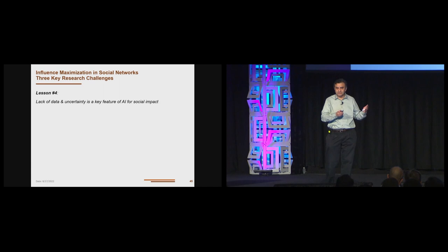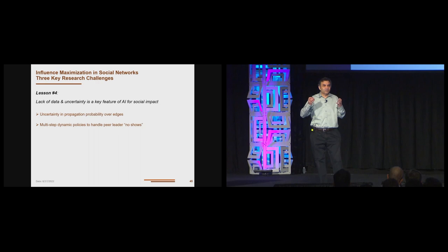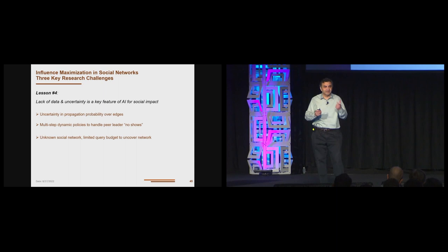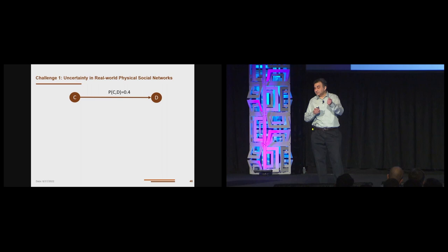If we take algorithms that have already been developed in the literature and try to apply them directly out of the box, here are some problems we face. Basically, there's a lot of lack of data and uncertainty. The lesson I want to point out is that lack of data and uncertainty is a key feature of AI for social impact. And we have to figure out techniques to get around that. I said the propagation probability is 0.4, but there's uncertainty about exactly the propagation probability. I said we can invite key influencers, but these are youth in difficult circumstances. One of them may get arrested on the way to the drop-in center. So we need multi-step dynamic policies to recover from no-shows. And thirdly, the social network itself may be unknown.